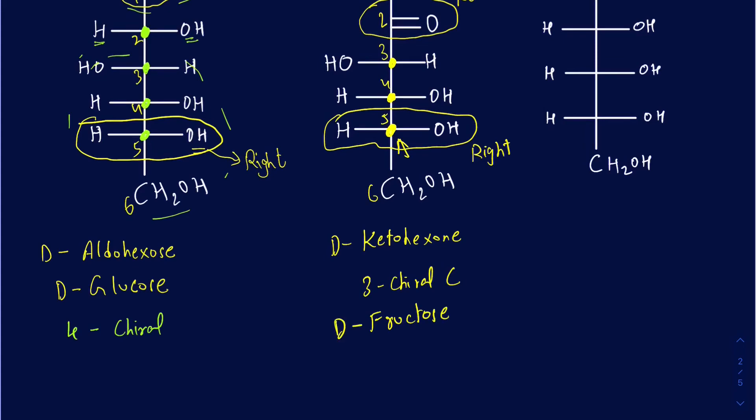When we talk about sugars, the D sugars are the most common and most stable ones found in nature. The L sugars are not that common, and even in human body processes, D sugars are mostly used. When we talk about amino acids, it's the opposite — it's the L amino acids that are found in nature. But when we talk about sugars, it's the D sugars that are found in nature.